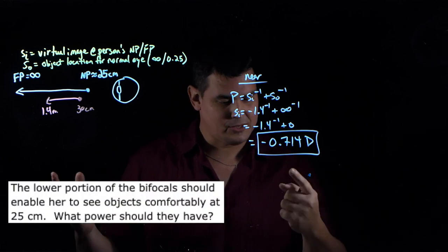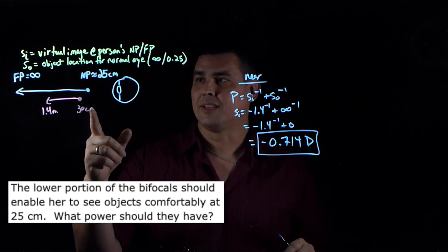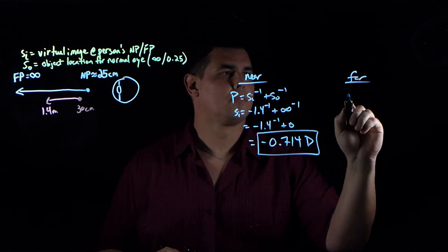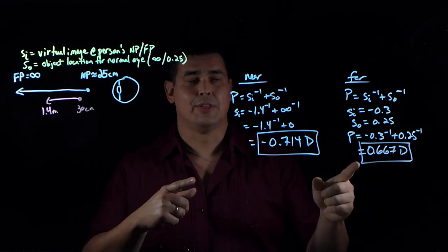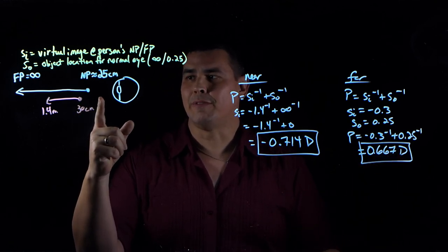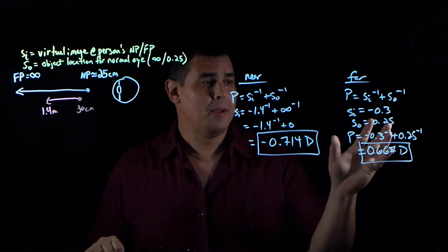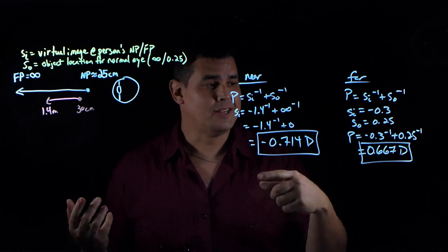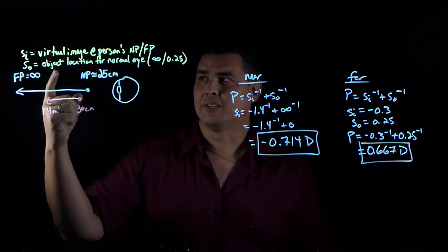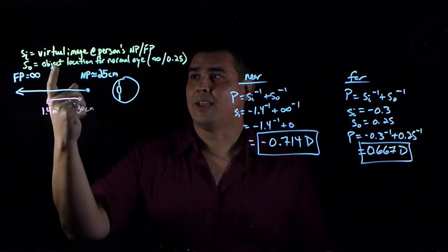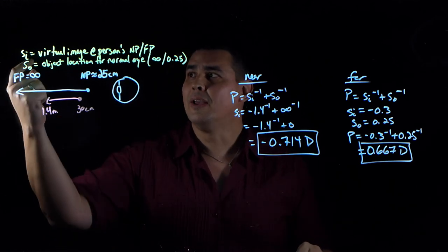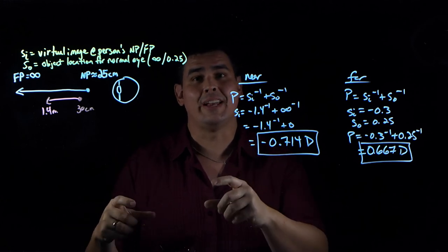Now fixing the farsightedness: the lower portion of the bifocals should let her see comfortably at 25 centimeters, but her near point is only at 30. Plugging in negative 0.30 meters as image distance and 0.25 meters as object distance gives positive 0.667 diopters — a small prescription. This makes sense because fixing farsightedness requires a positive power converging lens. To summarize: SI is always the virtual image at the near or far point (negative), and SO is either infinity or 25 centimeters.